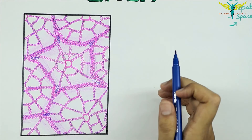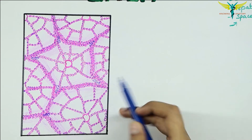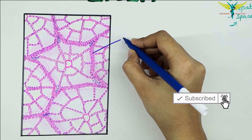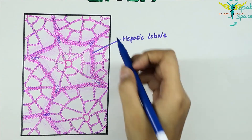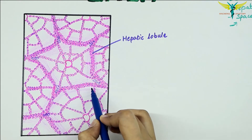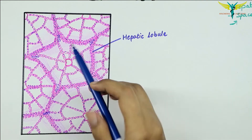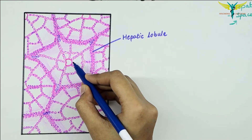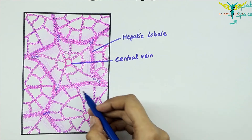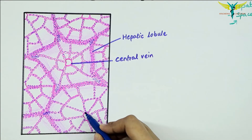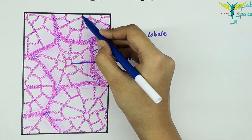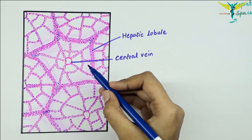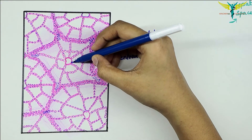We are able to see many hexagonal areas called hepatic lobules. This hexagonal area is one hepatic lobule. These lobules are partially separated by connective tissue, and each lobule has a round small space in the center called the central vein. In each hepatic lobule you can see a central vein, and a number of broad irregular cords of cells pass from this central vein to the periphery of the lobule.